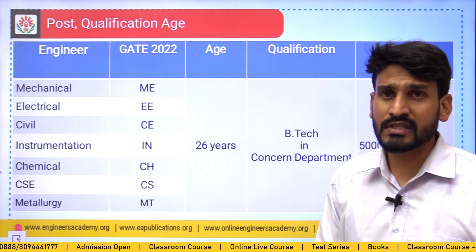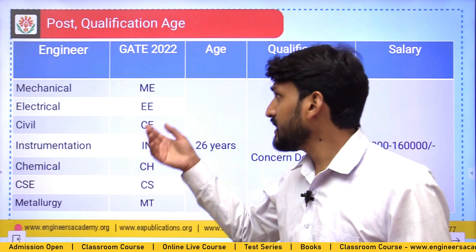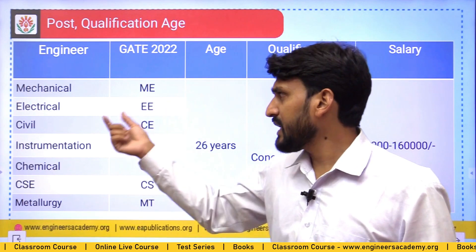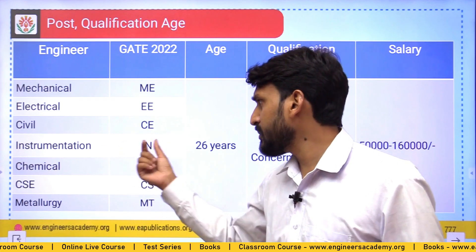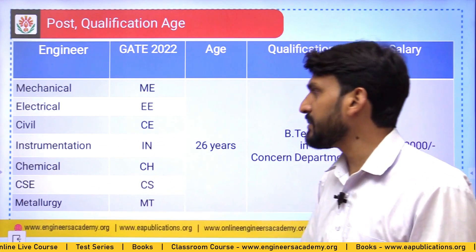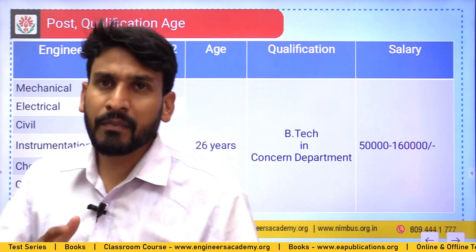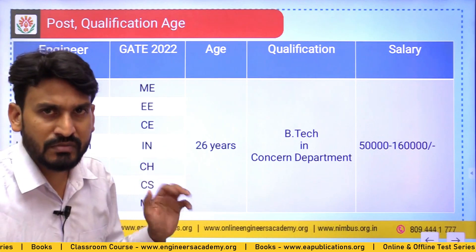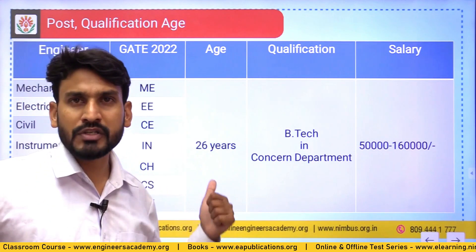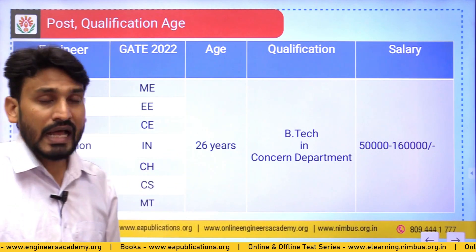Branch eligibility ki baat karein - Mechanical (ME), Electrical (EE), Civil (CE), Instrumentation (IN), Chemical (CH), Computer Science (CSE), aur Metallurgy (MT) - yeh saat branches eligible hain iske andar. Agar aapka B.Tech in branches mein ya inki sub-branches mein hai, lekin GATE paper aapka in codes mein hona chahiye, to definitely aap apply kar payenge.